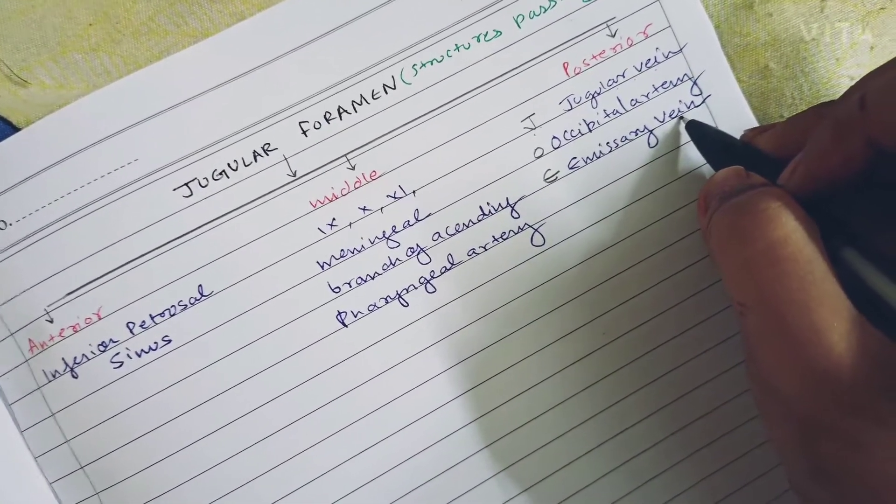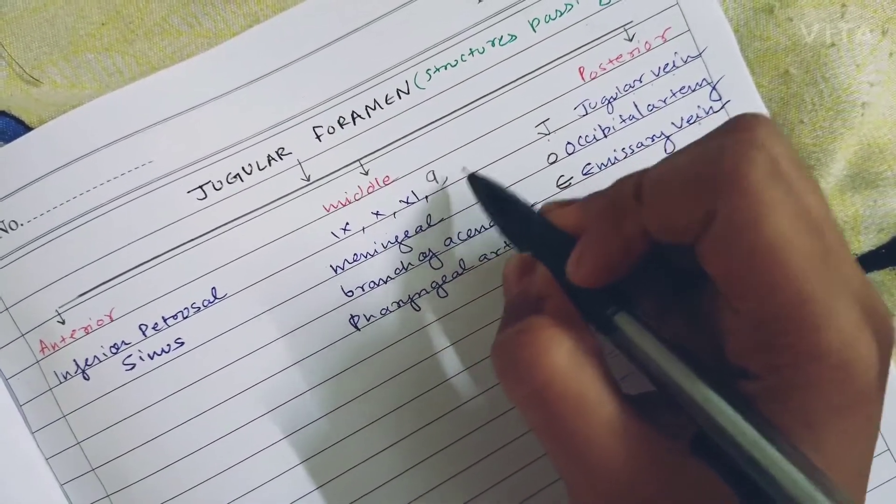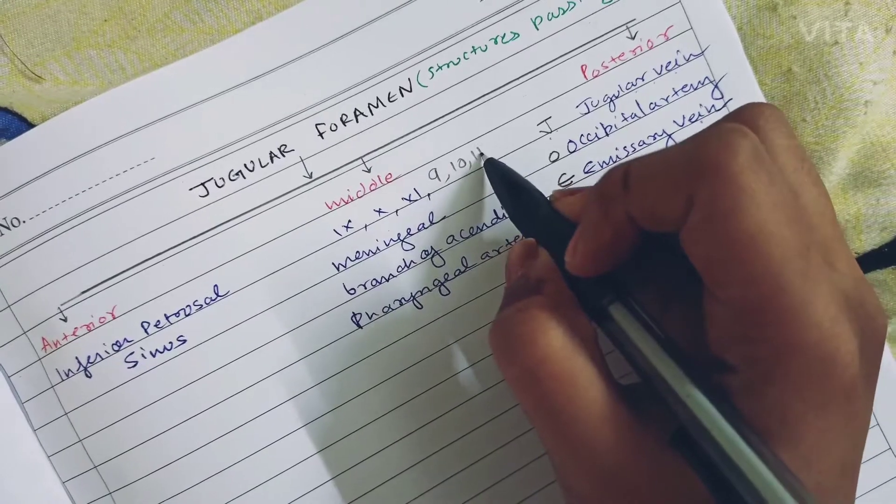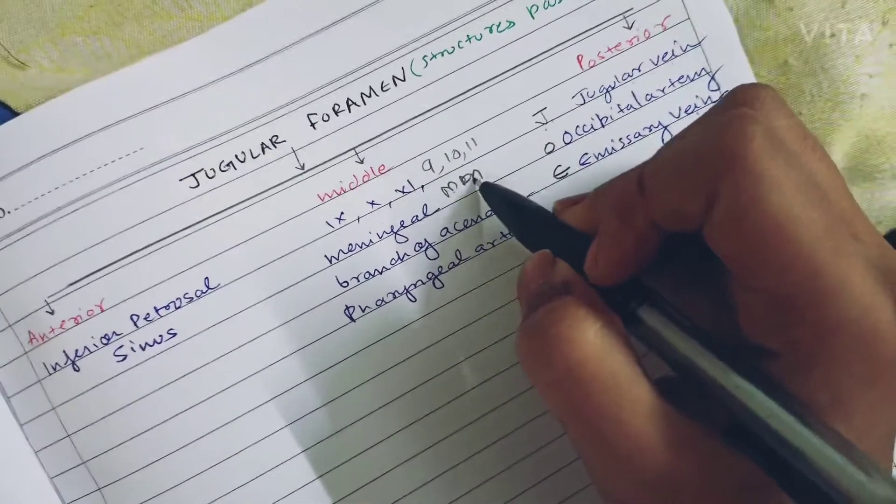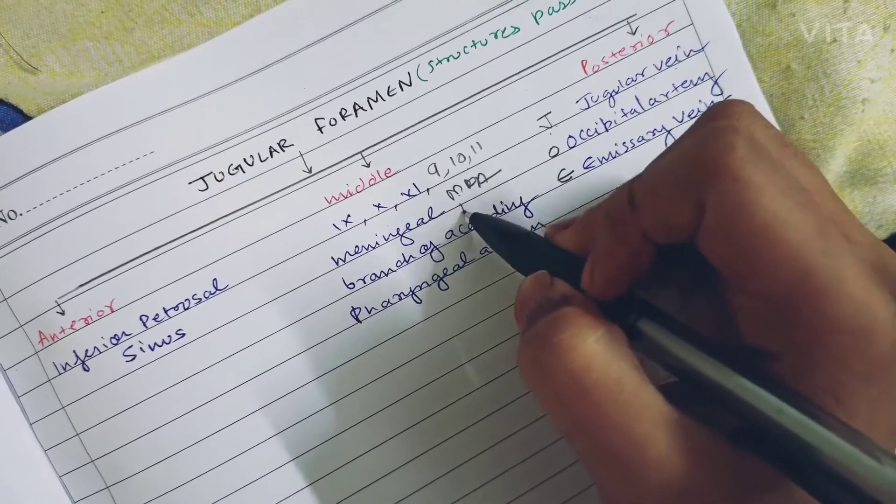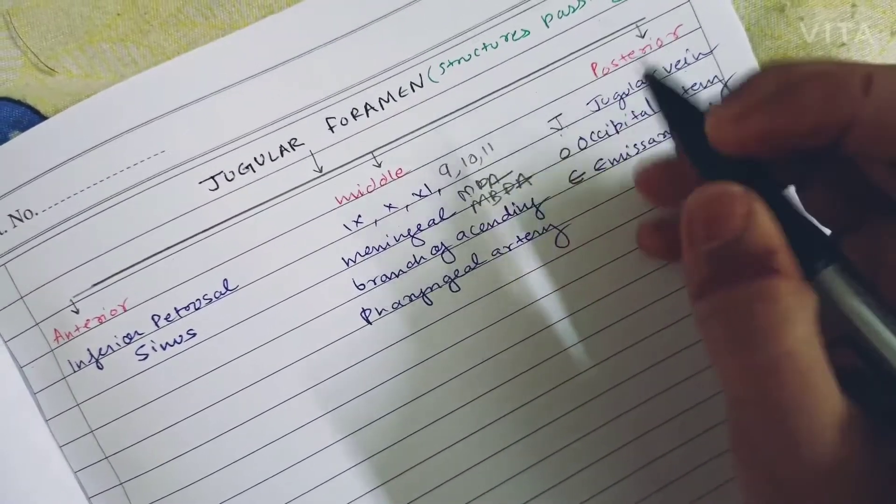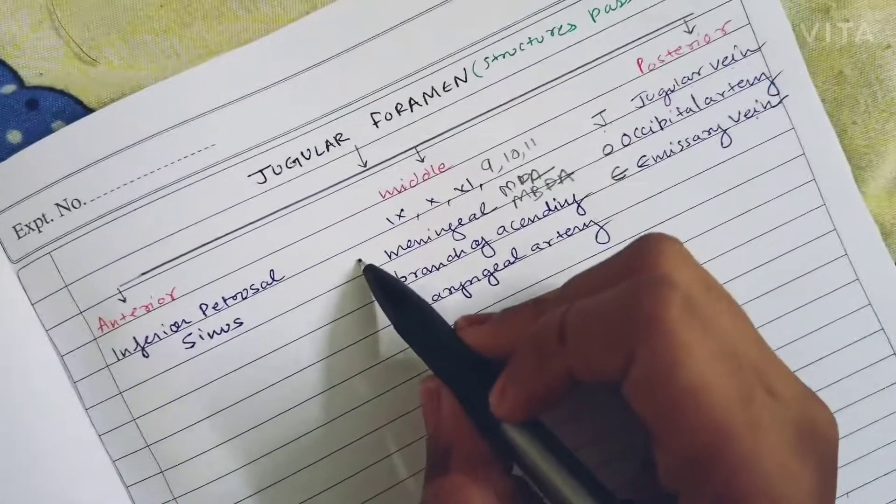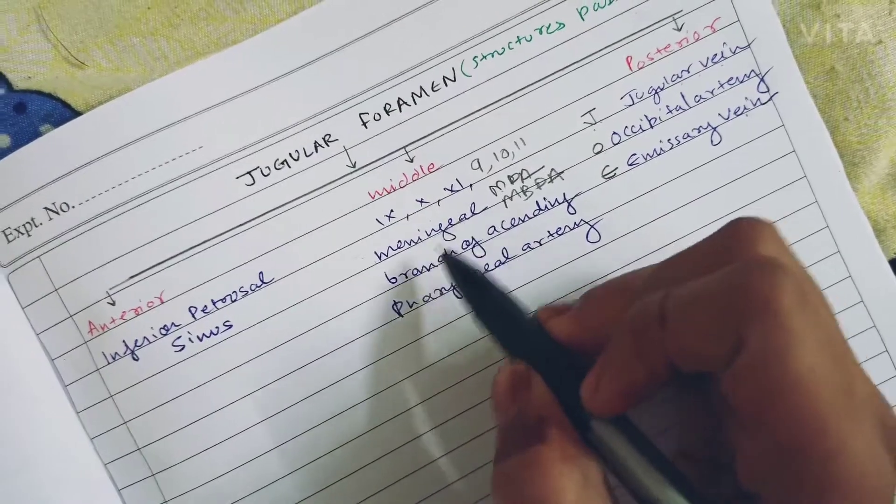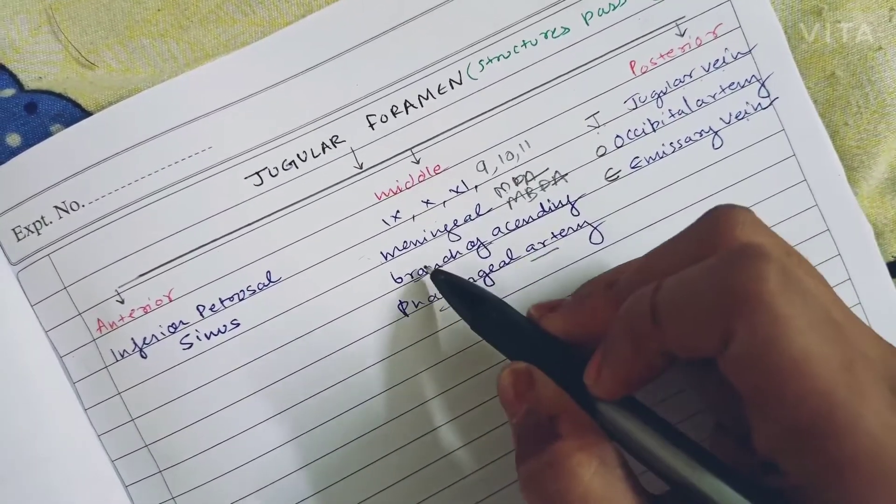Then Joe studied 9th class, 10th class, and 11th class, and did MBA, or you can say MBPA. It is a kind of degree that we made. So MBPA is meningeal branch of ascending pharyngeal artery.